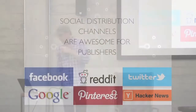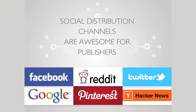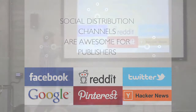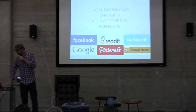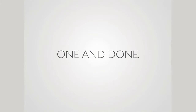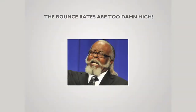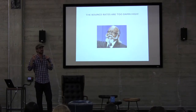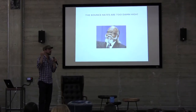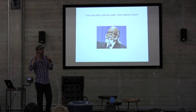What do I mean by that? Social distribution channels are fantastic. These days, when you want to find readers, they don't have to come to your homepage. They can find you through Reddit, Facebook, Twitter, all sorts of great places. But there's a problem, and the problem is one and done — people read your story and they go back to Facebook. So that leads to this problem, which is that the bounce rates are too damn high. The bounce rate is essentially the percentage of your readers that read one page divided by all the people that read your content.